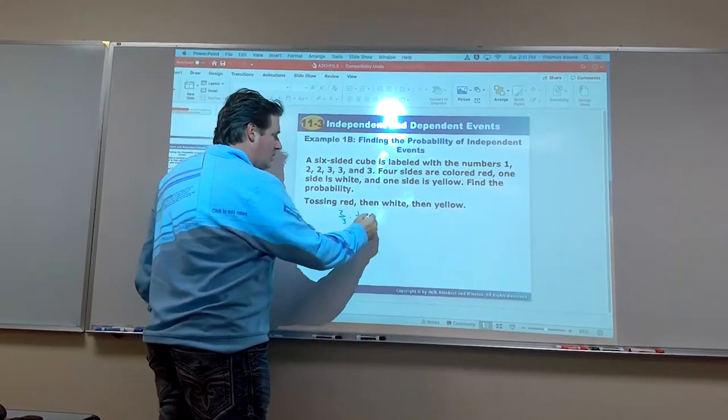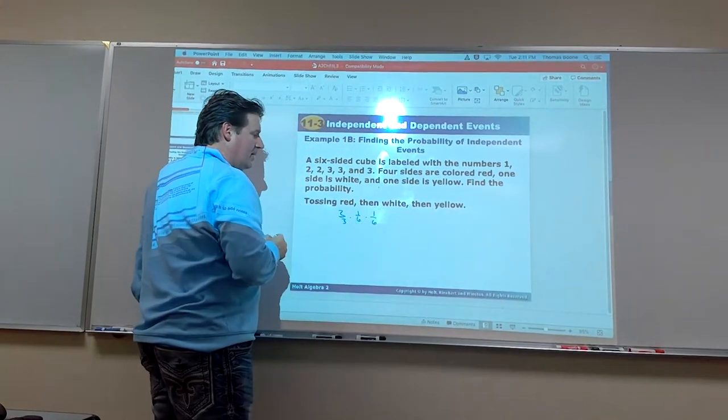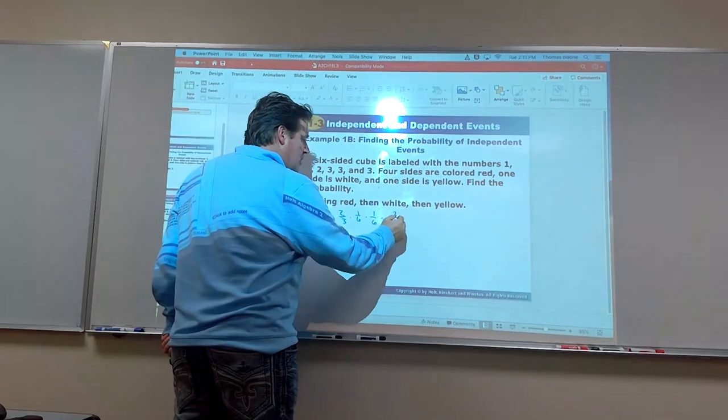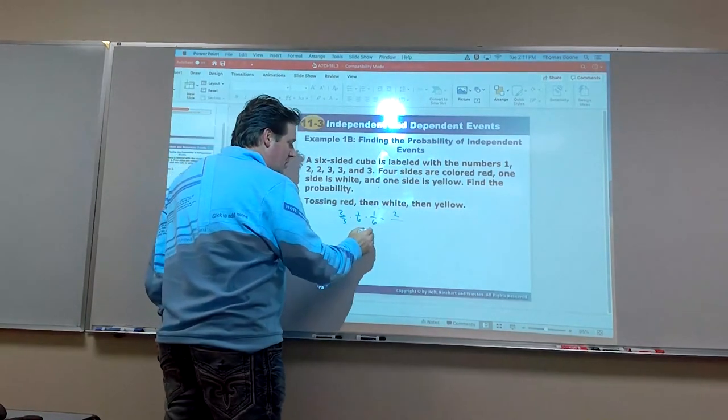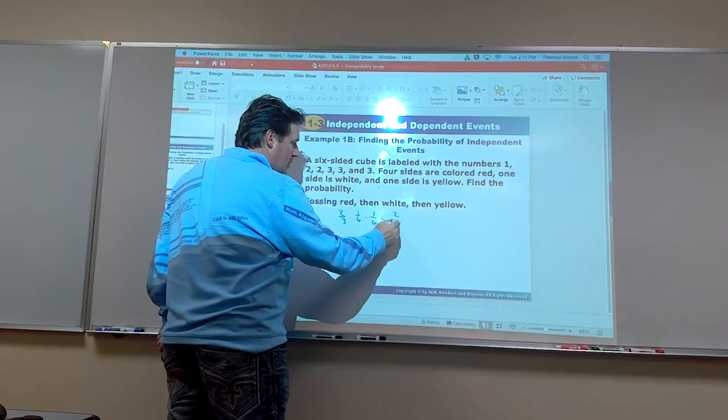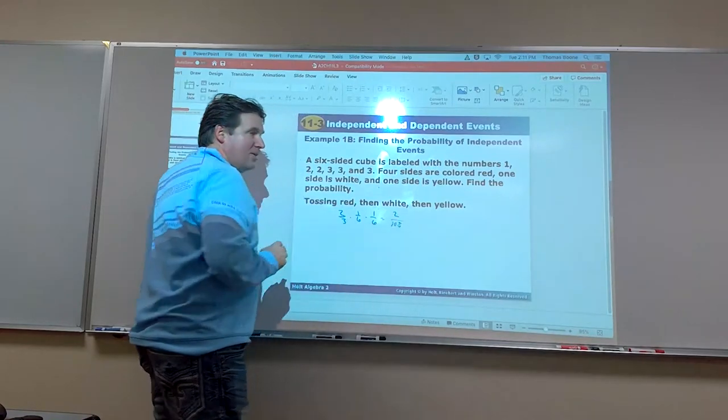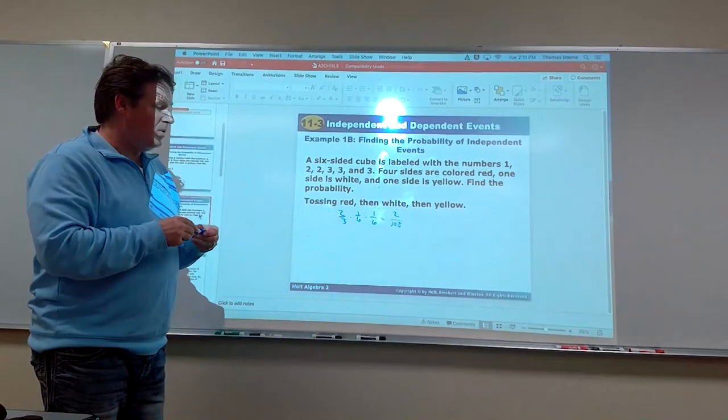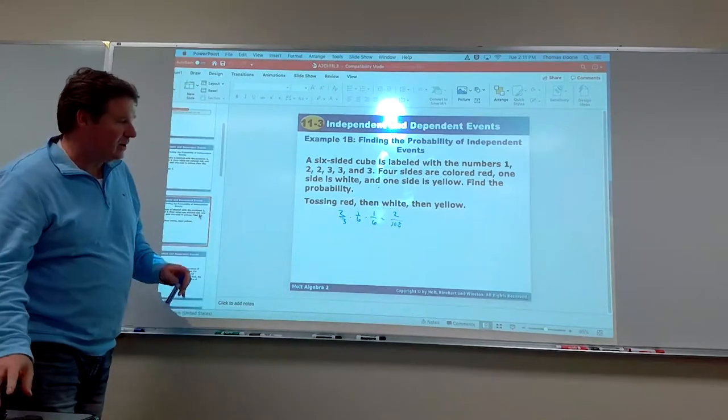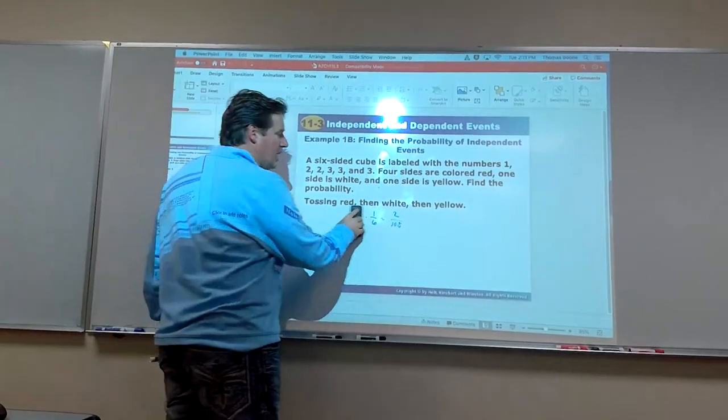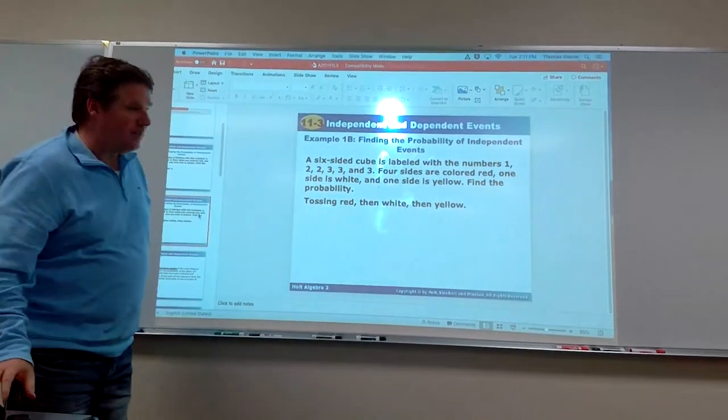And then yellow. Okay, so we go there. Alright, 36. So again, multiply those together. We'd have 2, let's see that would be what, 108? Or 1 out of 54 chance is what that would be. Again, if you want to reduce your fractions there. Okay, so again, just multiply the probabilities together. It's just that simple.